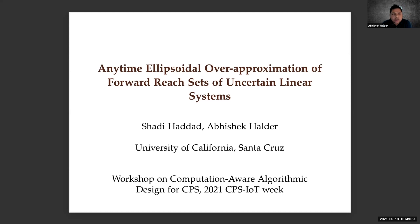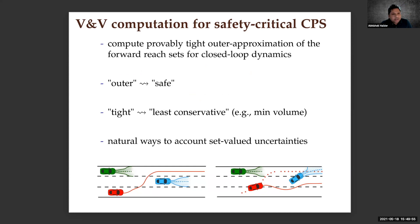As the last presentation introduced, validation and verification computation for safety-critical cyber-physical systems is an important task for performance guarantees. The common approach is to compute a provably tight outer approximation of the forward reachable sets for the closed-loop dynamics. There are two qualifiers here: 'outer' and 'tight.' The qualifier 'outer' ensures safety — we always want an over-approximation. The qualifier 'tight' means we want to minimize conservatism in our outer approximations.